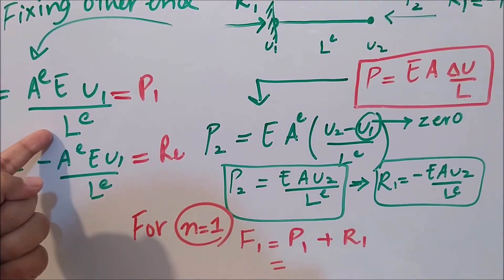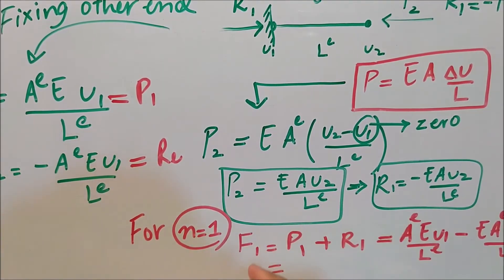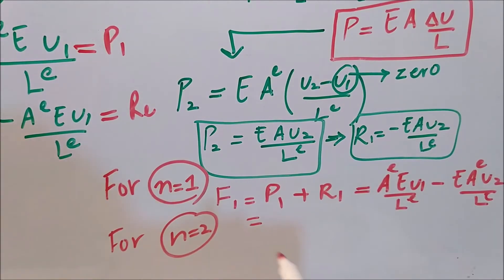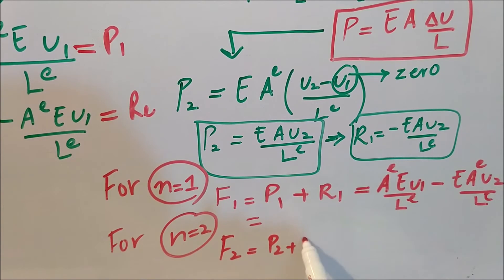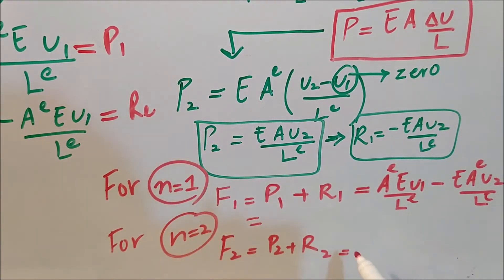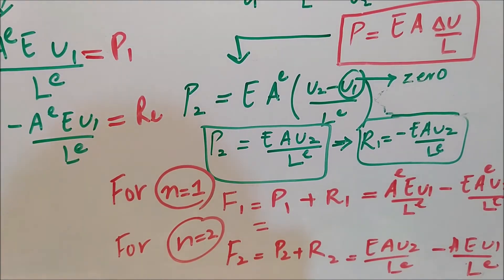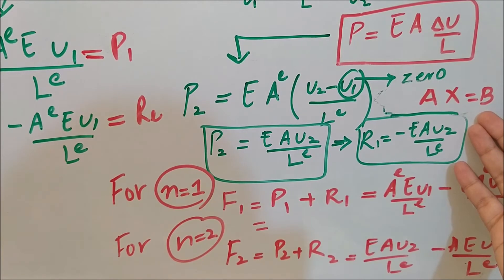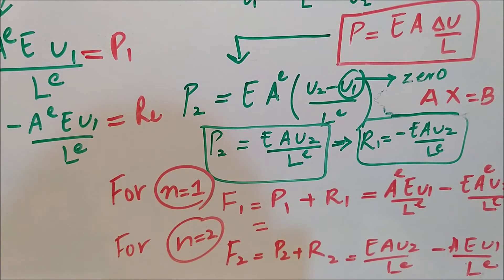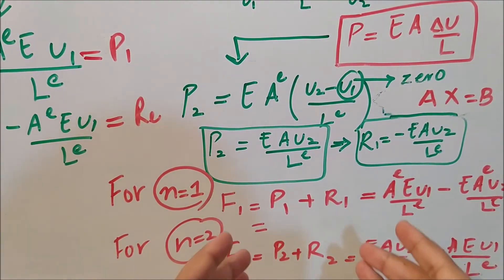Writing the values: P1 equals AE·u1 over L, and R1 equals negative EA·u2 over L. For node two, the total force F2 equals P2 plus R2. Now we have two equations for the net force at node one and the net force at node two. We are all familiar with the system Ax equals b, which is very useful when solving a system of equations.